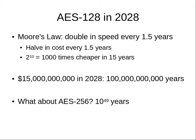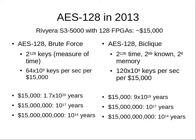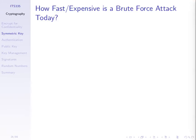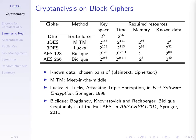Extrapolating using Moore's Law, even with computers getting faster and faster, AES-128 remains secure. Spending $15 trillion in the year 2028 would still take 100 billion years to break. AES-256 would take 10 to the power of 49 years. So AES is considered secure against brute force attacks — just making the key long enough defeats brute force. Brute force is the easy, dumb way; there are also other cryptanalysis attacks on these ciphers.